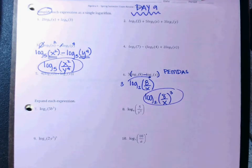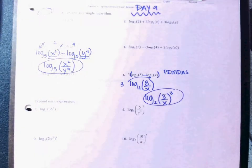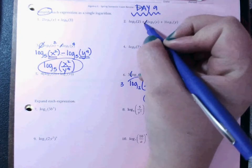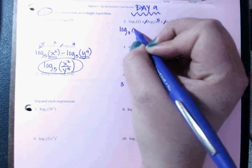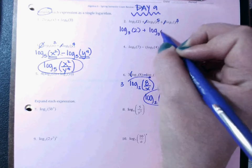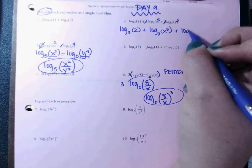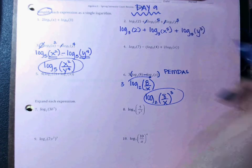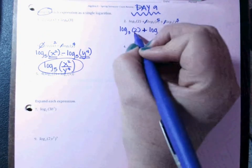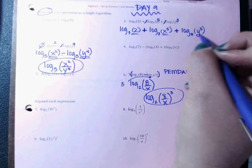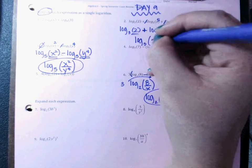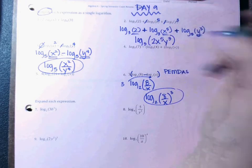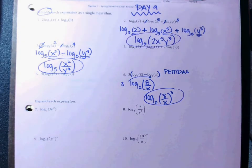Let's jump back and do number two. First thing I'm going to do is bump this five up and bump this three up, so now I have log base 3 of 2, plus log base 3 of x to the fifth, and then log base 3 of y to the third. Since this is a plus and this is a plus, that means we are multiplying these three arguments, so it would be log base 3 of 2x⁵y³. We multiply because the problem originally had addition in it.